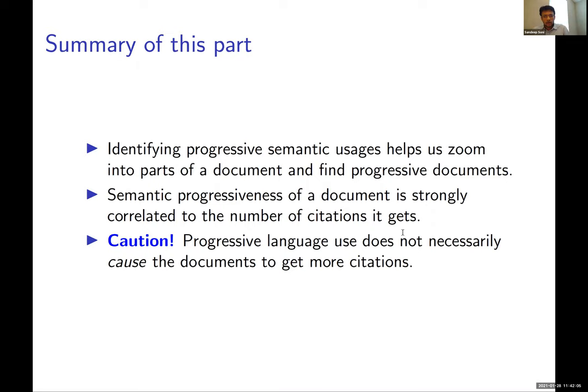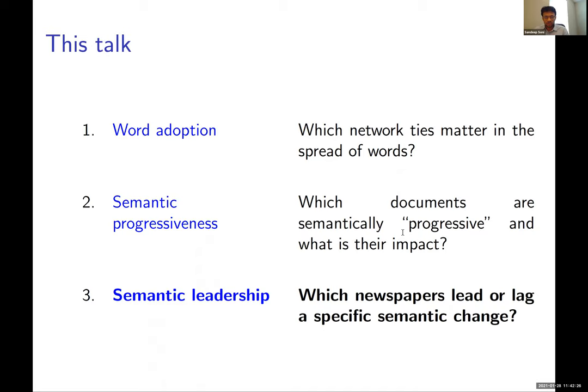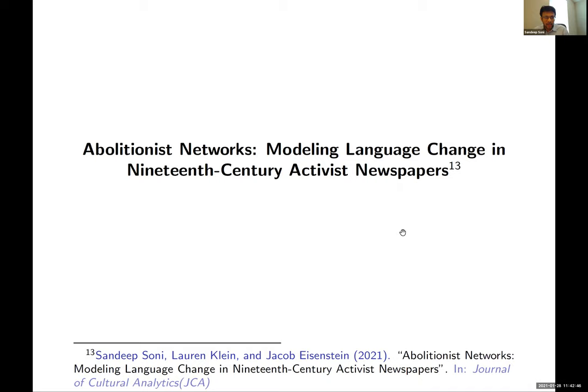The final study takes the idea of finding progressive documents and extends it to the collection level: if you have multiple documents from a newspaper, and there are multiple newspapers, which newspapers lead or lag a specific semantic change? This paper just came out, modeling language change in 19th-century activist newspapers to create networks among those newspapers. The newspapers we considered were abolitionist newspapers — abolitionism was a mid-19th-century movement in the United States to end slavery, and these newspapers played a very important part in shaping that discourse.